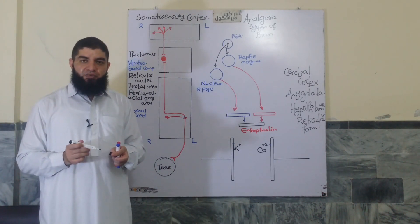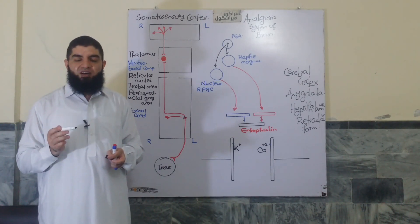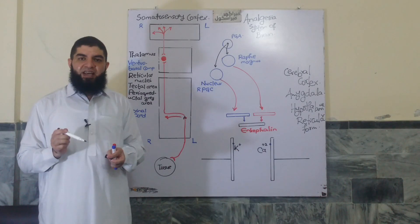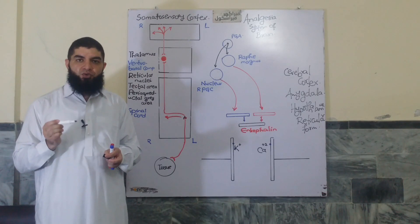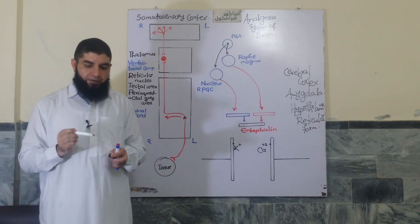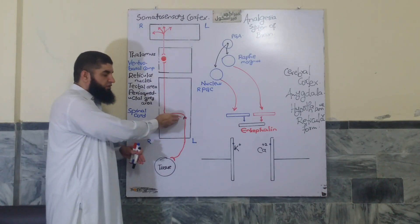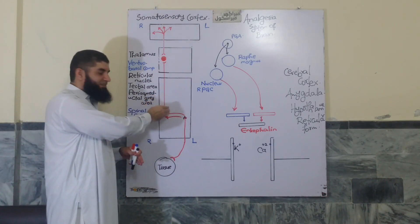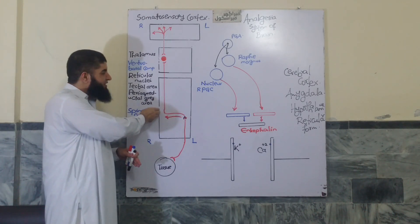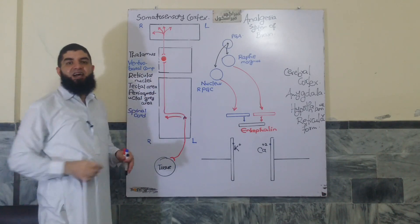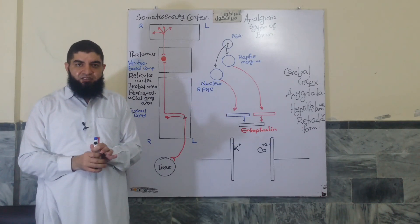The fast pain fibers terminate primarily in the lamina marginalis, the lamina 1 of the spinal cord, while those carrying slow pain impulses terminate primarily in the lamina 2, 3 and 5 of the spinal cord. The fast pain fibers thereafter form the second order neurons that cross immediately to the opposite side of the spinal cord and ascend on the contralateral side forming a bunch of fibers called the spinothalamic tract.